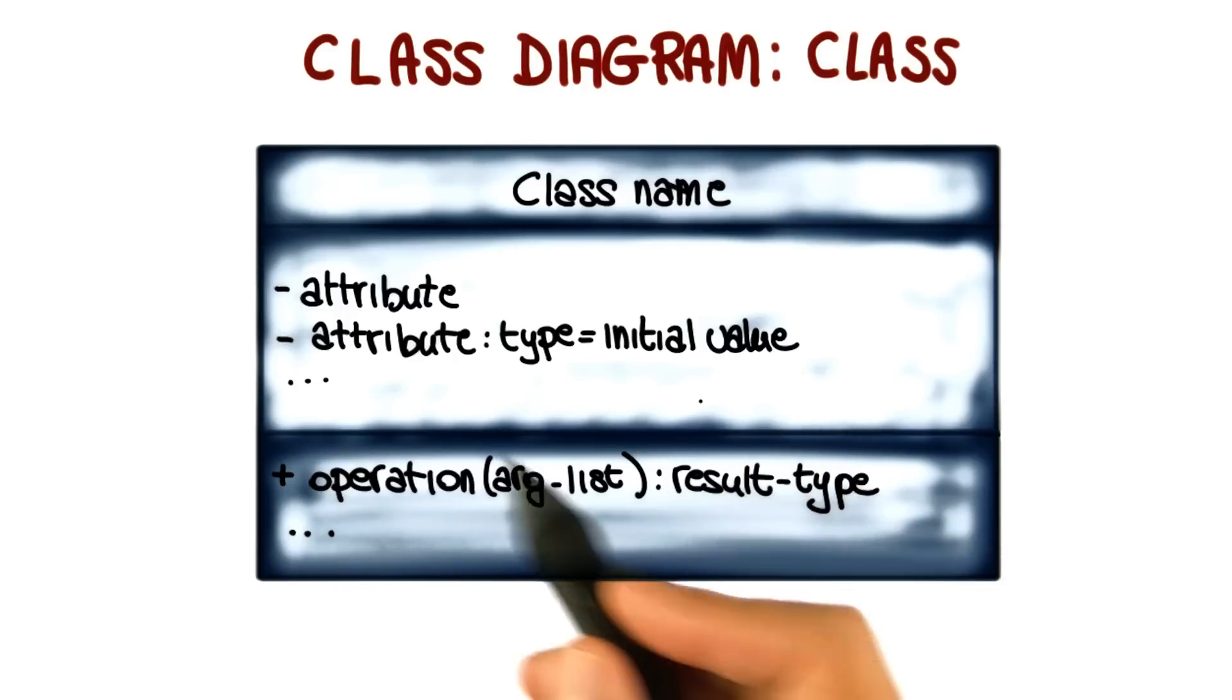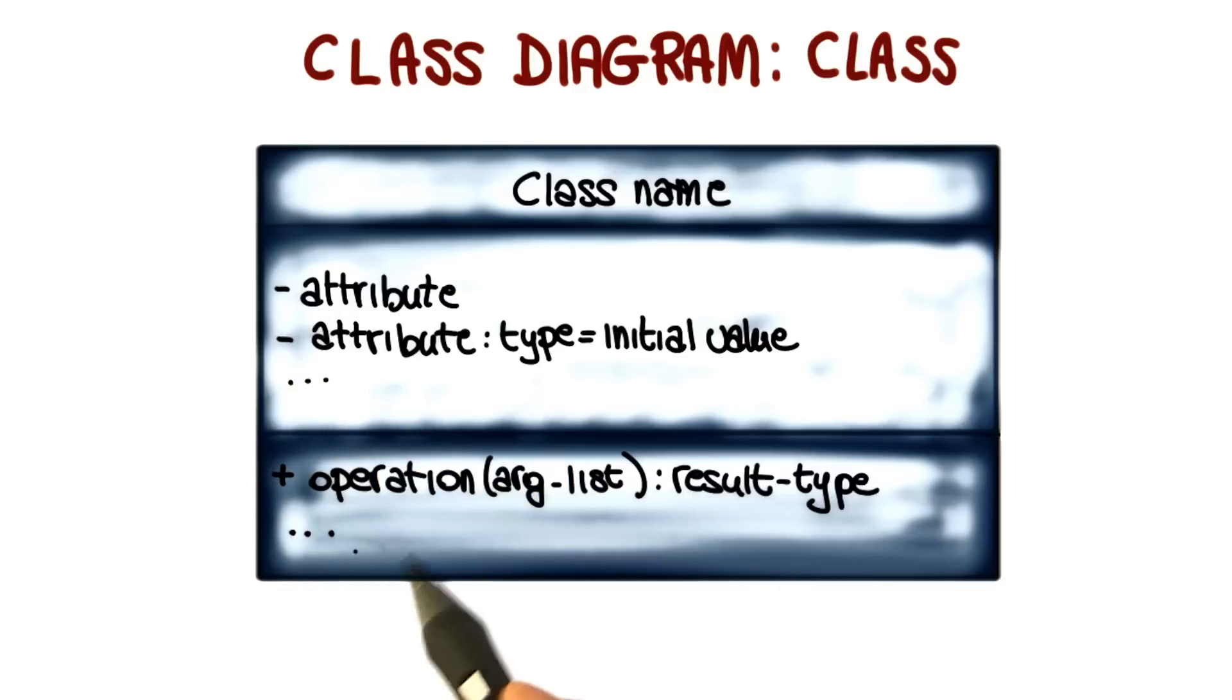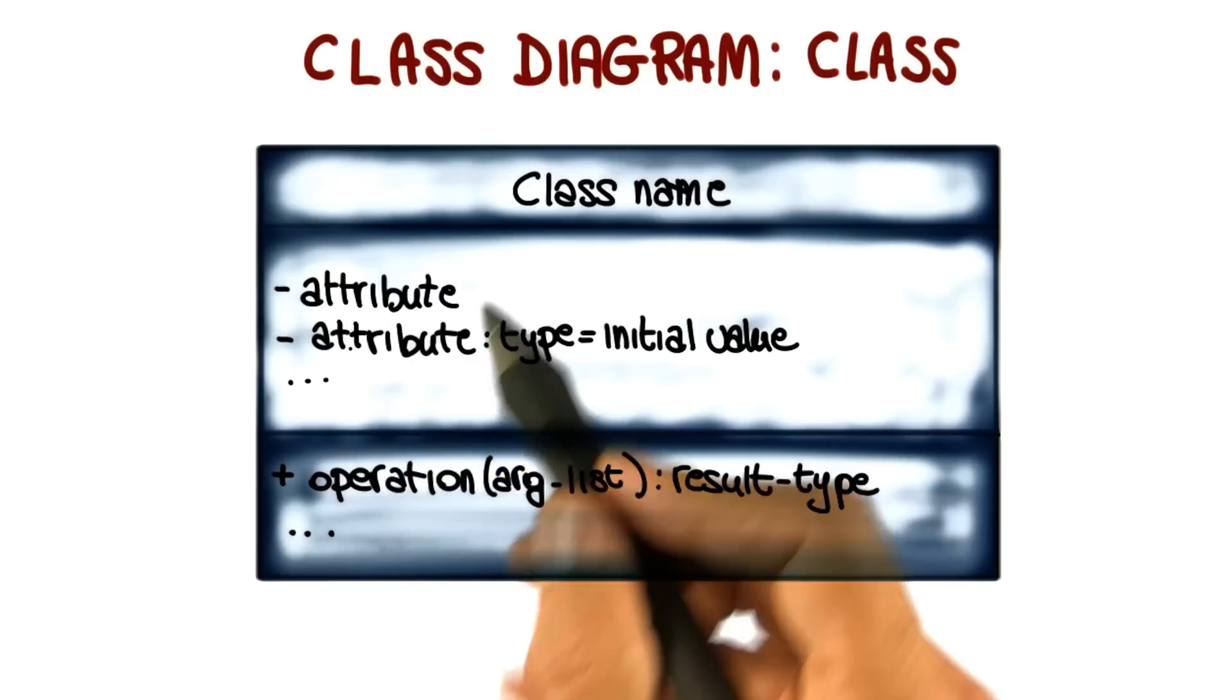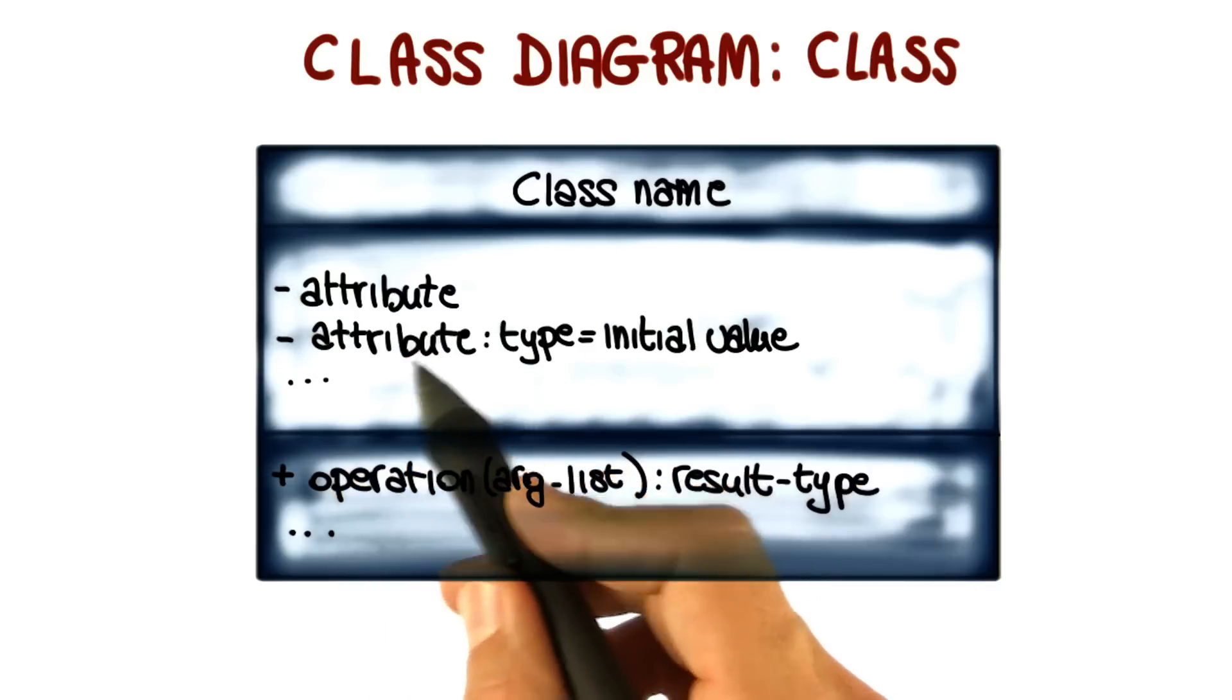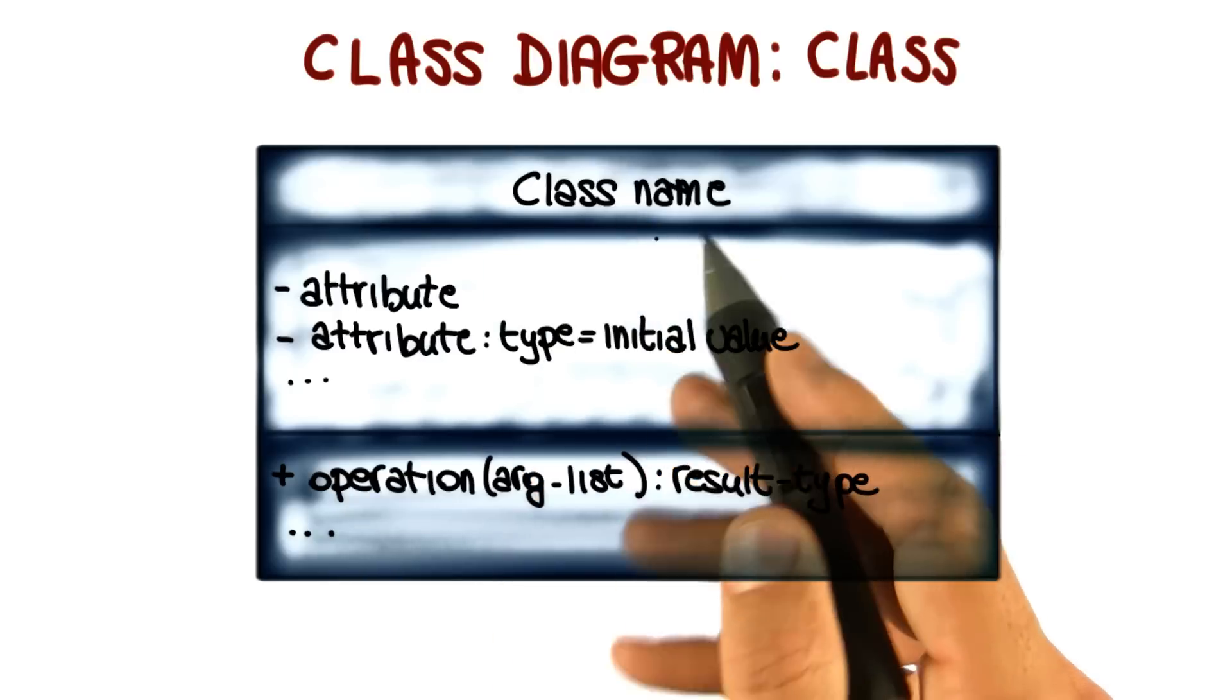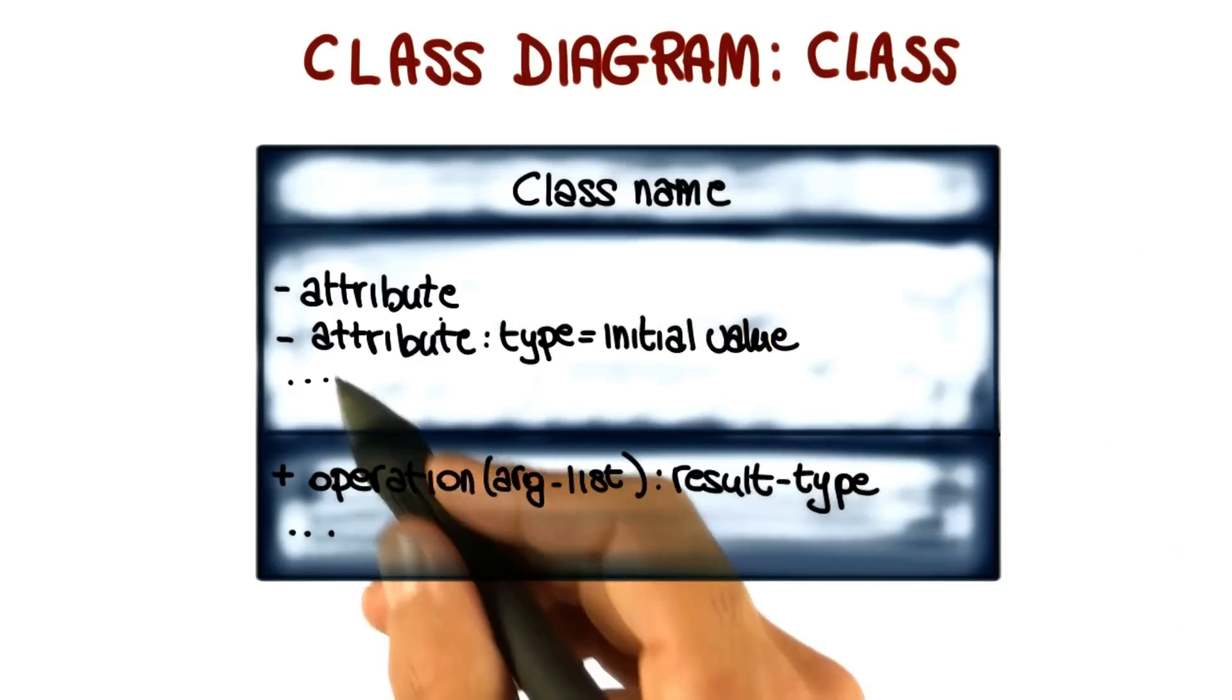Something else to note in this representation is that there is a minus before these attributes and a plus before this operation. This indicates the visibility of these class members. The minus indicates that the attributes are private to the class, so only instances of this class can access these attributes.